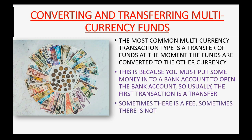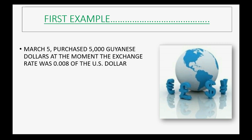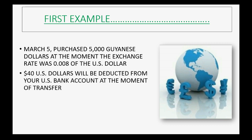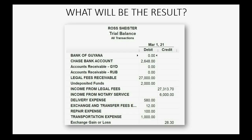Sometimes there is a fee and sometimes there is not. First example: on March 5th we purchased 5,000 Guyanese dollars. At the moment, the exchange rate was 0.008 of the U.S. dollar, meaning 40 U.S. dollars will be deducted from your U.S. bank account. At the moment of the transfer, 5,000 Guyanese dollars will appear as the balance in the Bank of Guiana, and $40 U.S. will be the balance in our trial balance.